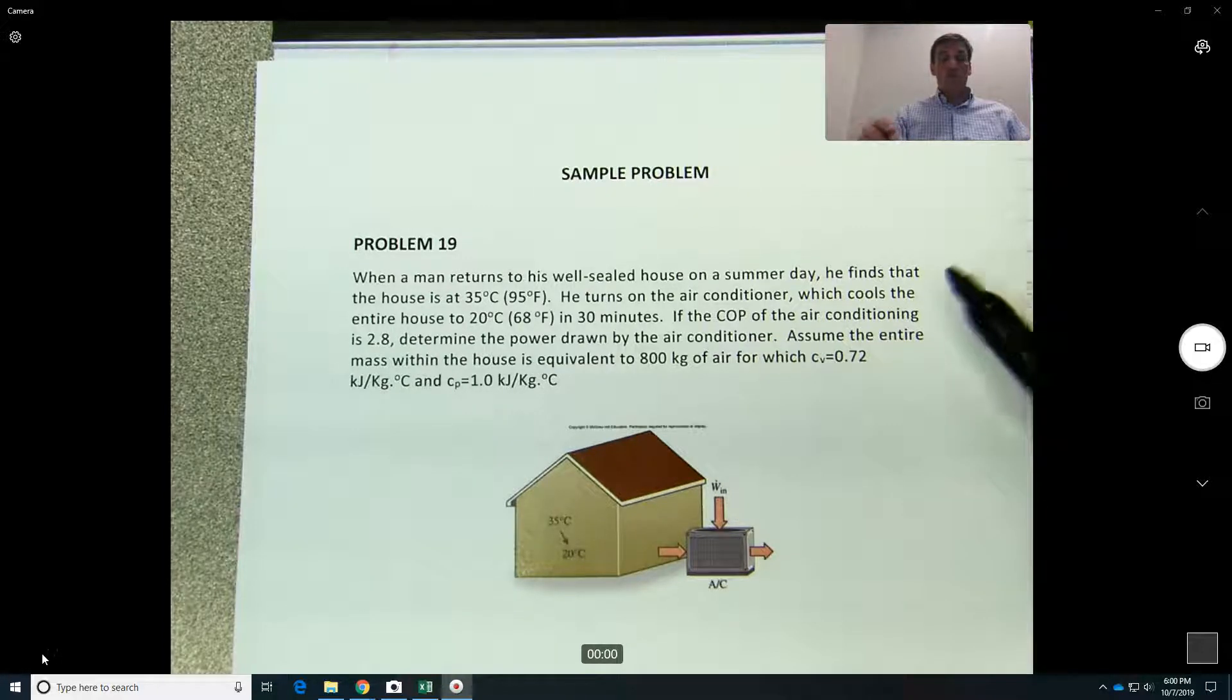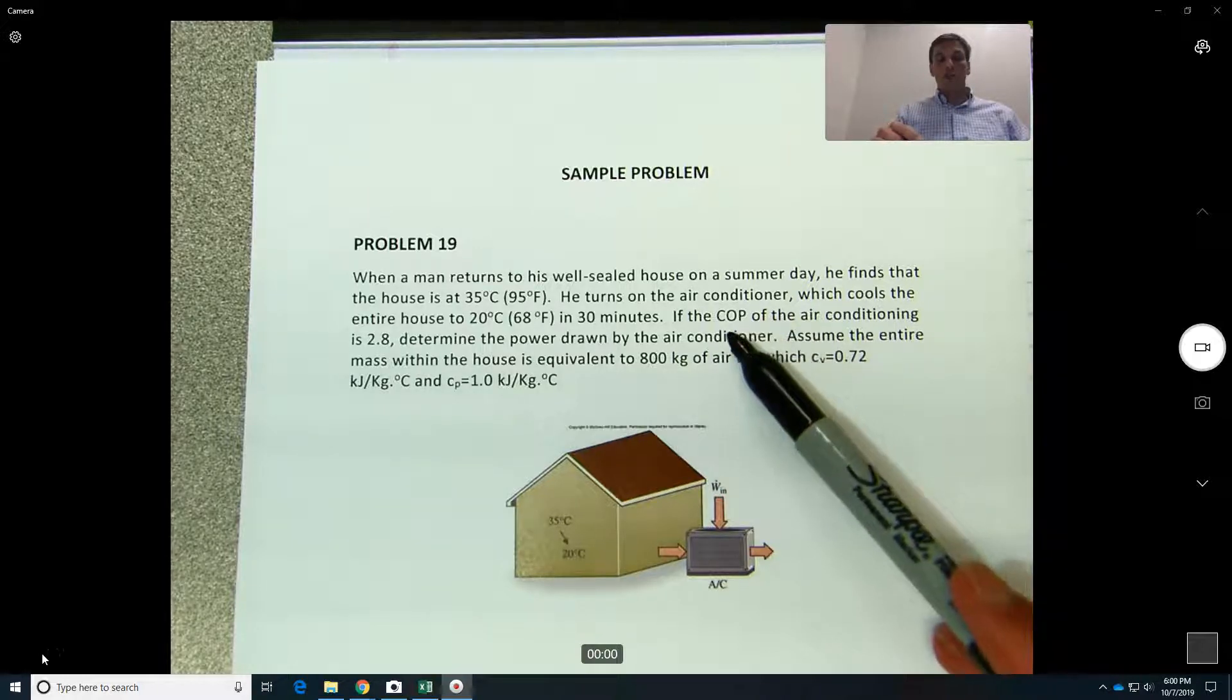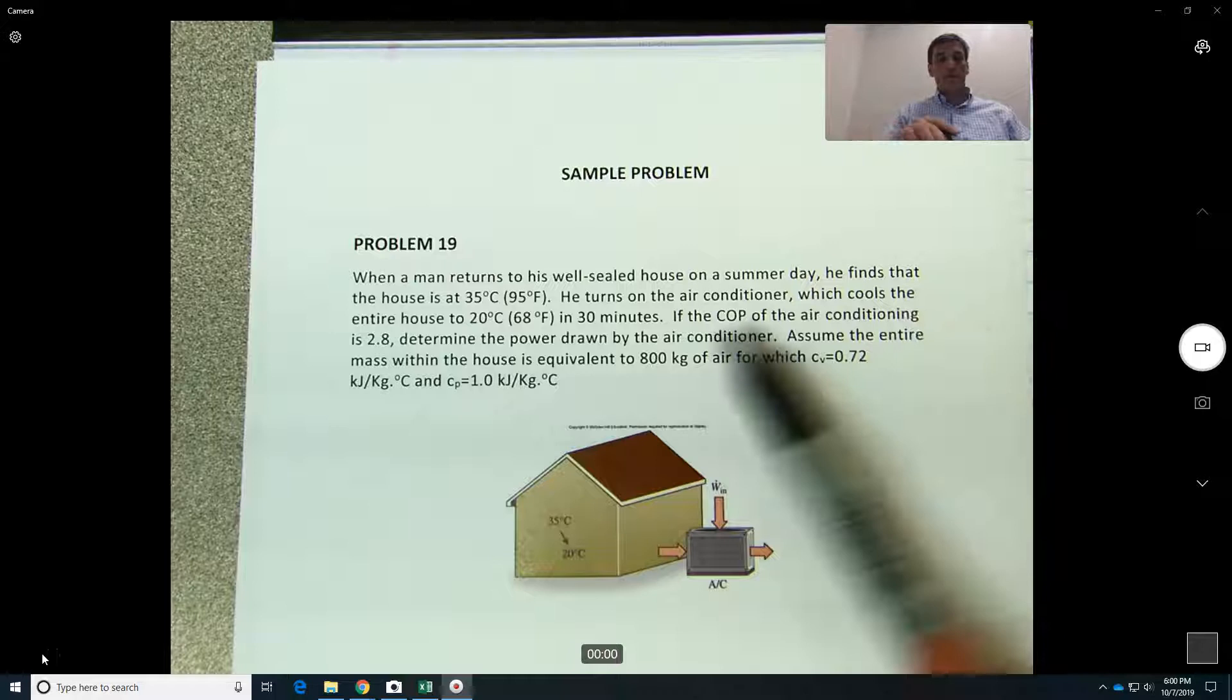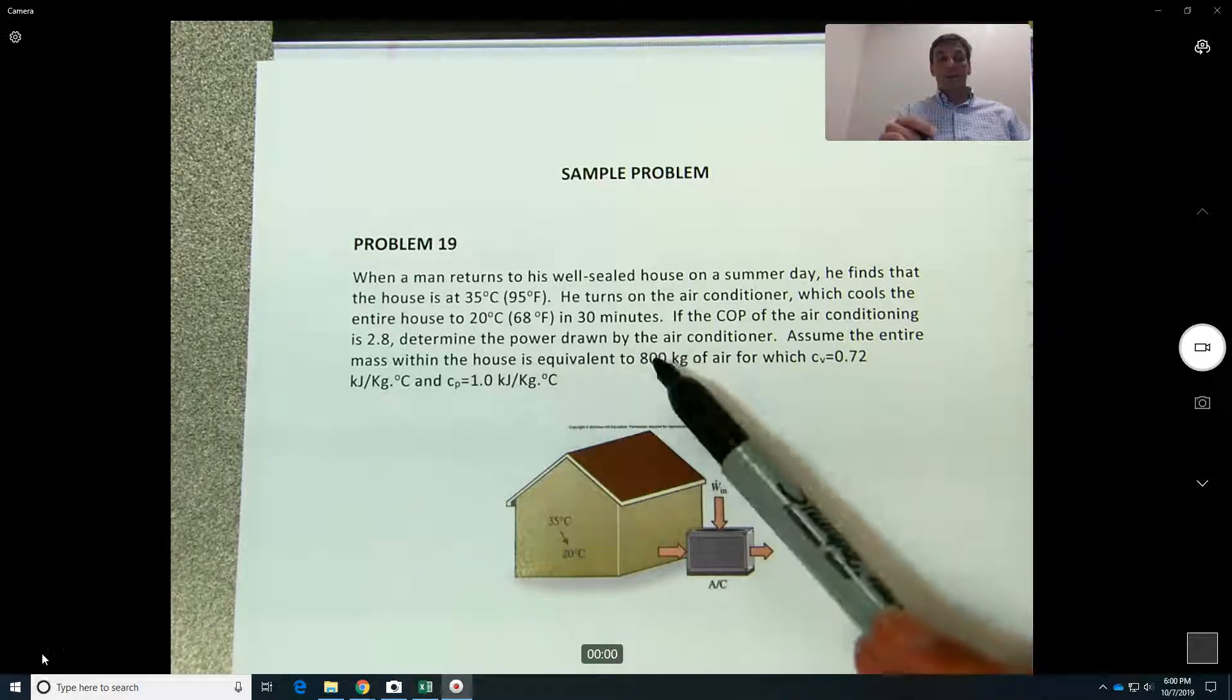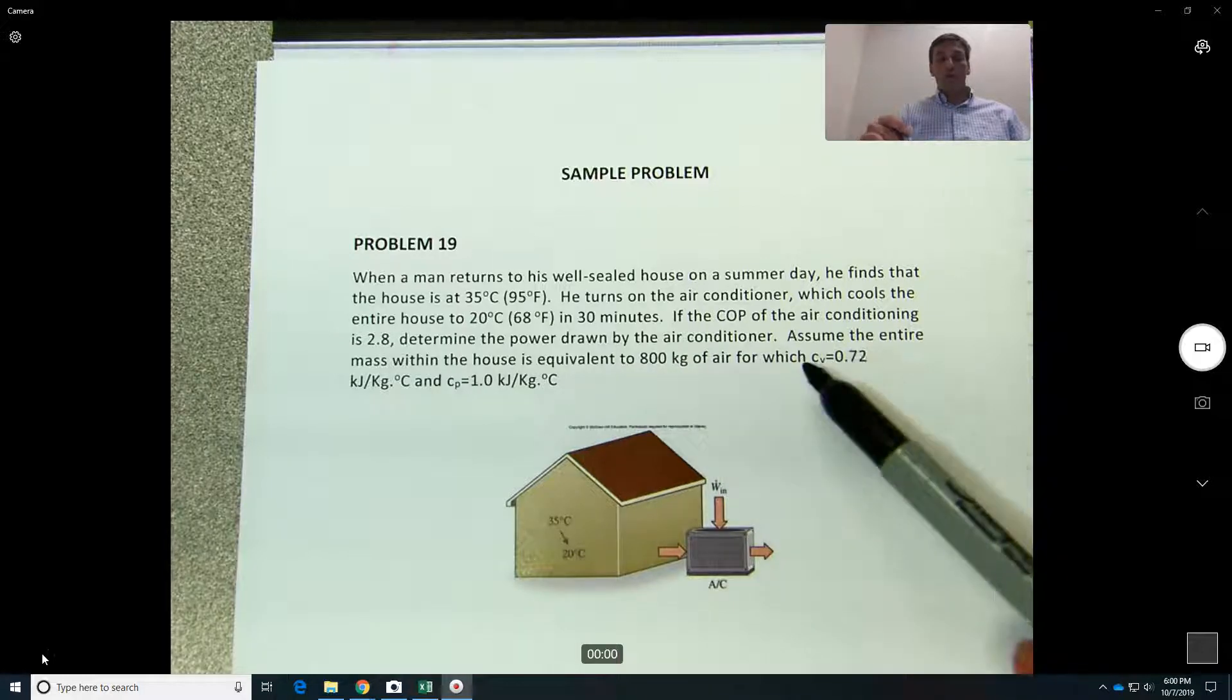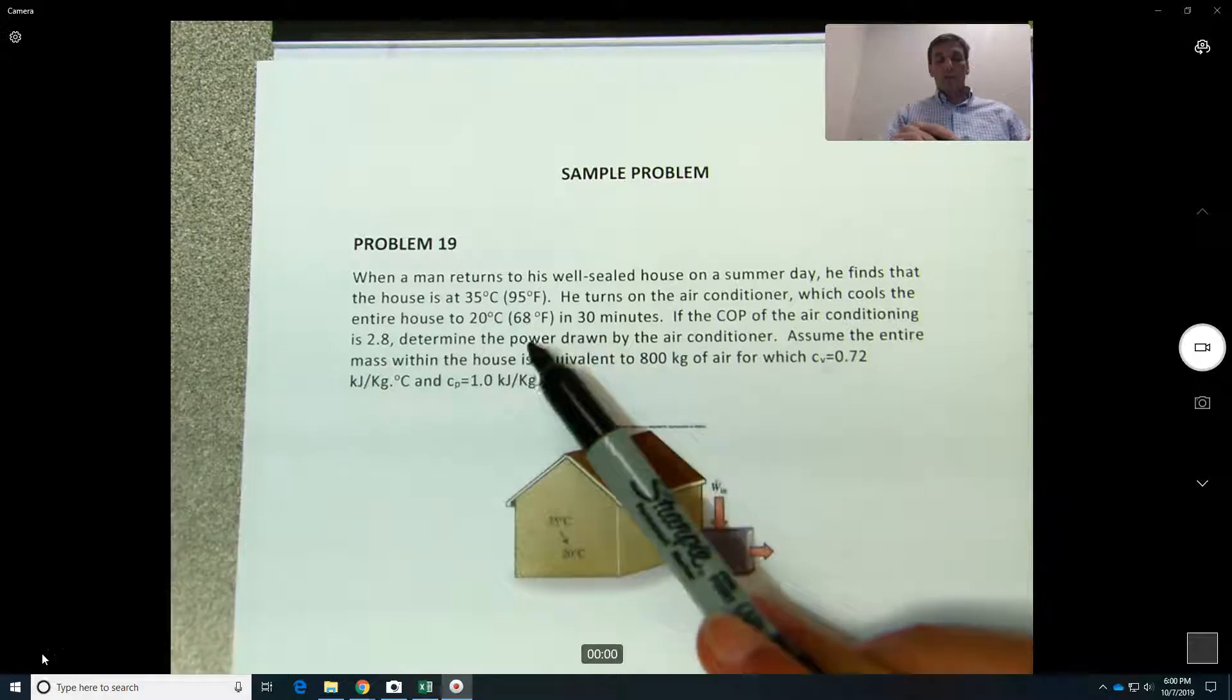If you know that the coefficient of performance of the air conditioning is 2.8—actually, if you go to your house, there should be a sticker on the air conditioner machine that should tell you what the coefficient of performance is. In this case it's 2.8. They ask us to determine what is the amount of power needed, how much electrical power you need to consume in order to achieve the temperature decrease.